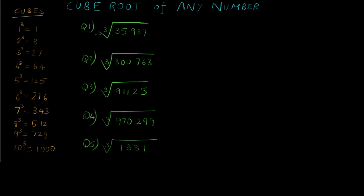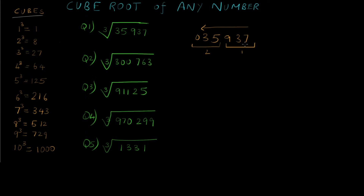We have to find out the cube root of 35937. We write down the number 35937, and starting from the right to the left we make groups of 3 digits. So this would be one group (937) and this would be the second group (035), with a 0 extra just for pairing purposes. For group number 1, we check the units place — it is 7. We search for the cube that has units digit 7, which is 7 cubed = 343. So the first digit of our answer is 3.